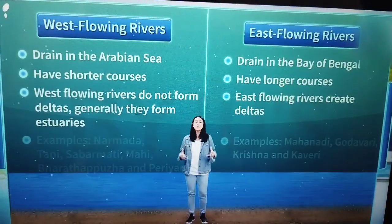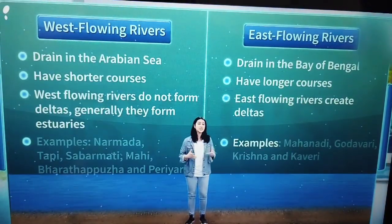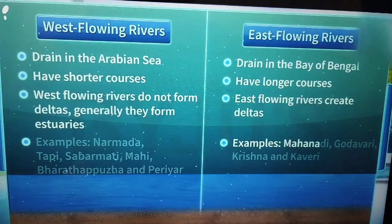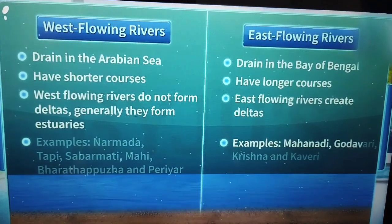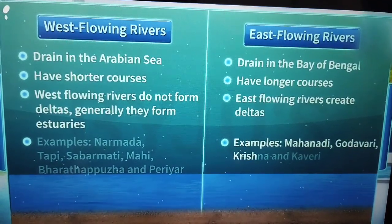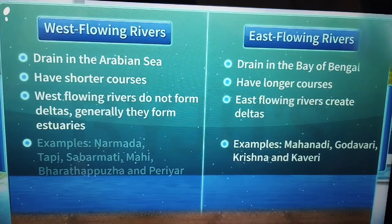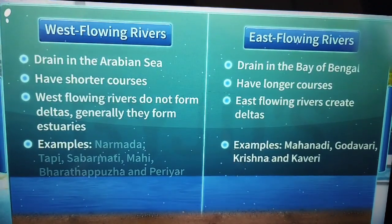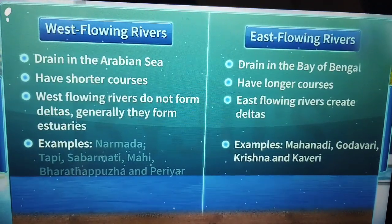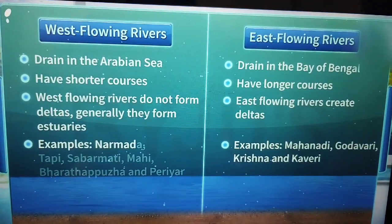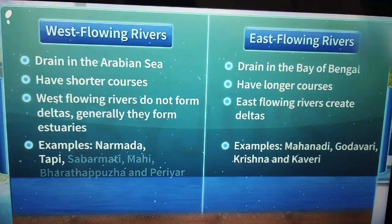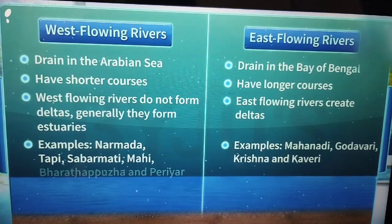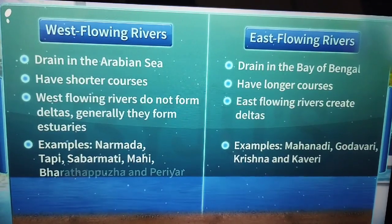Some examples of the East flowing rivers are the Mahanadi, the Godavari, the Krishna, and the Kaveri. And some examples of the West flowing rivers are the Narmada, the Tapi, the Sabarmati, the Mahi, the Bharatpuzha, and the Periyar.